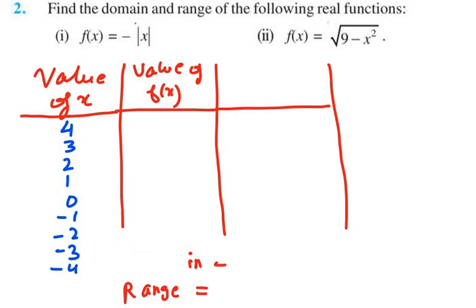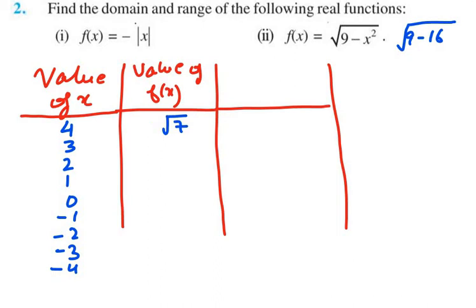Now we put each value into f(x) = √(9 - x²). For x = 4: √(9 - 16) = √(−7). For x = 3: √(9 - 9) = √0 = 0. For x = 2: √(9 - 4) = √5. For x = 1: √(9 - 1) = √8. For x = 0: √9 = 3. For x = minus 1: minus 1 squared is 1, so √(9 - 1) = √8.